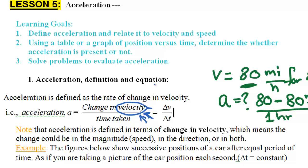Acceleration is actually a concept we sense every day. When you place a box on the top of your car and make a turn to the left, the box will be displaced to the right and could fall off the roof. And vice versa — if you make a turn to the right, the box might be displaced to the left, unless it is attached very well to the top of your car.